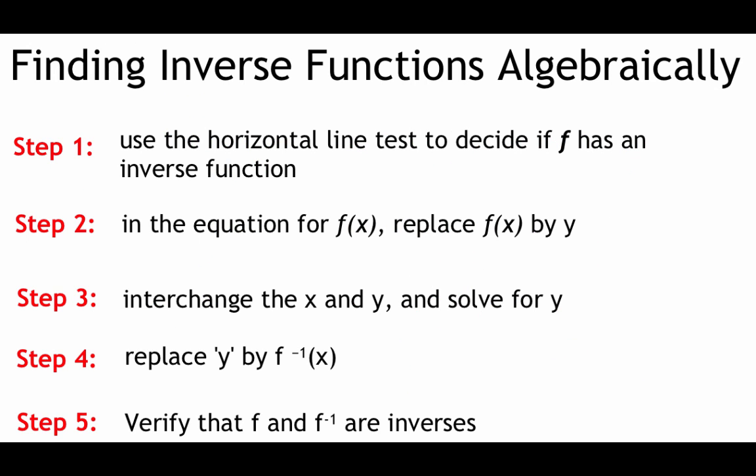If the horizontal line test passes, here's the process to find the inverse. Step one: use the horizontal line test to confirm the function has an inverse. Step two: replace f(x) with y. Step three: swap the x's and y's in the equation, then solve for y. Step four: replace y with inverse function notation, f⁻¹(x). Step five: verify by using function composition — you should end up with just x.